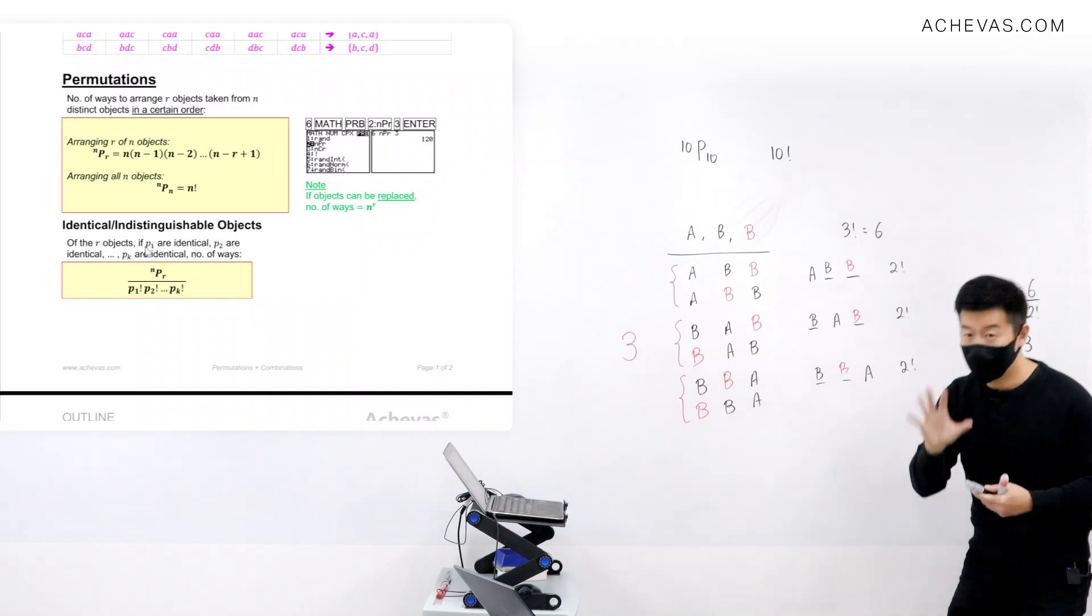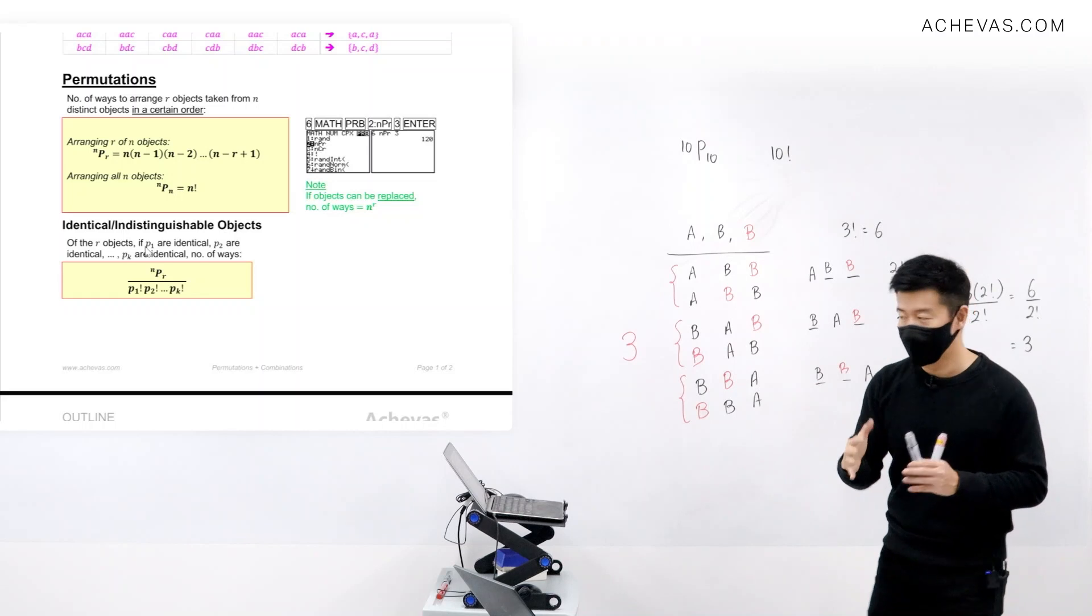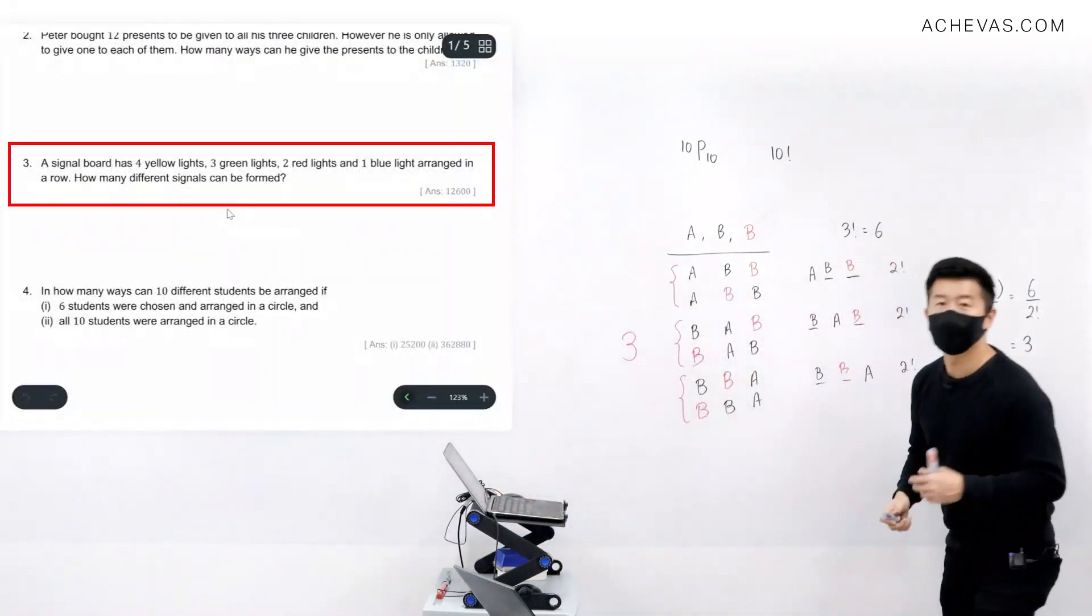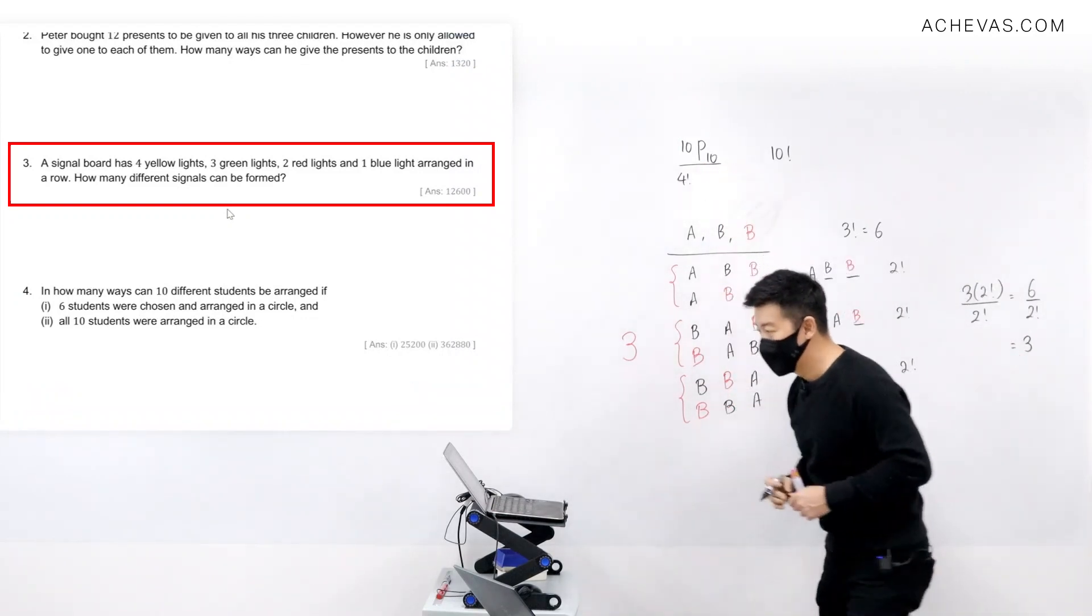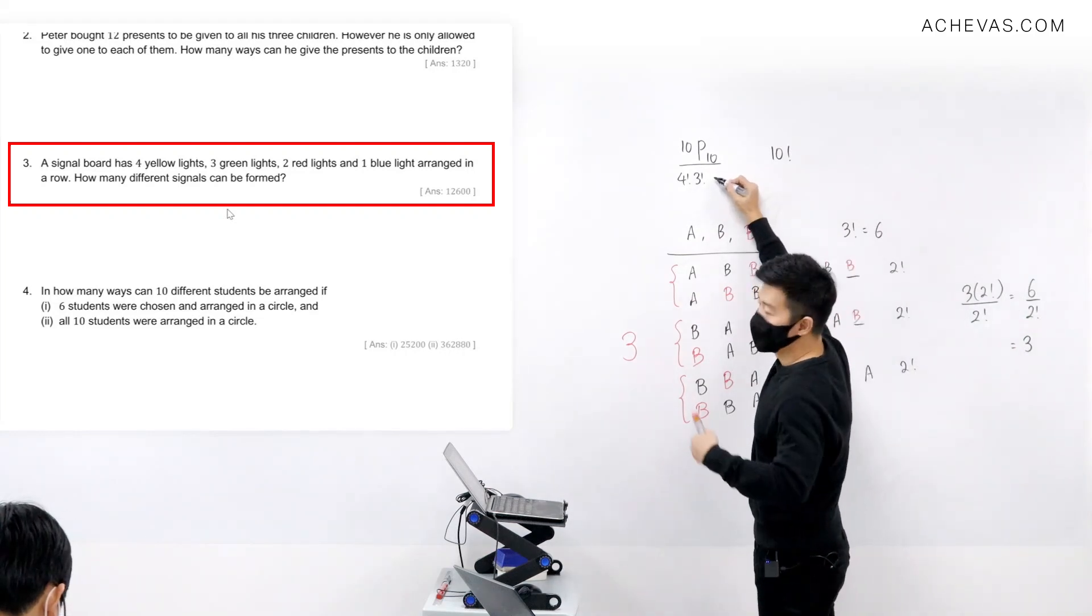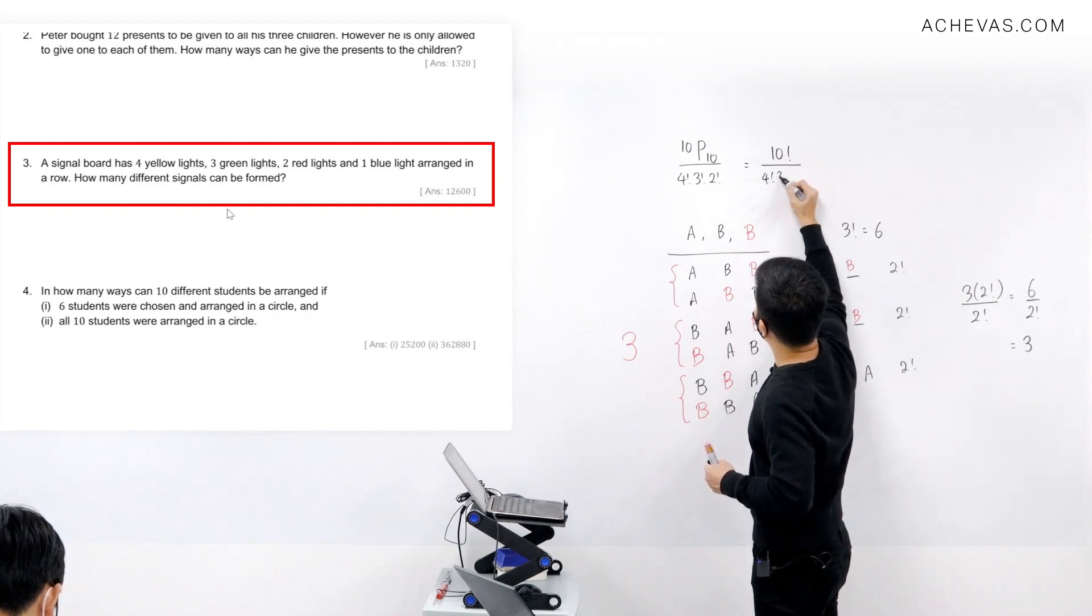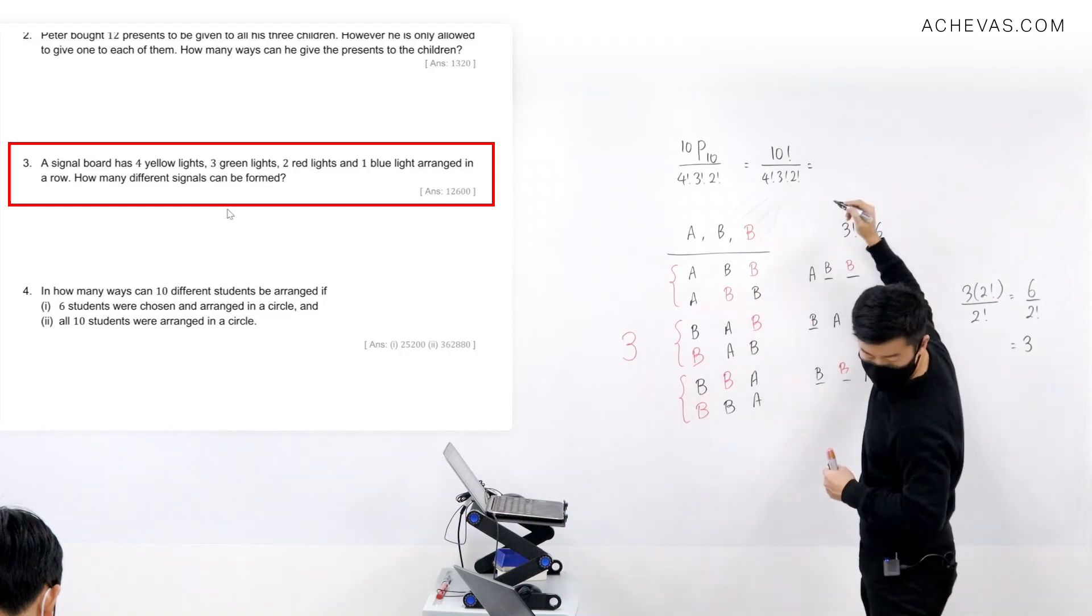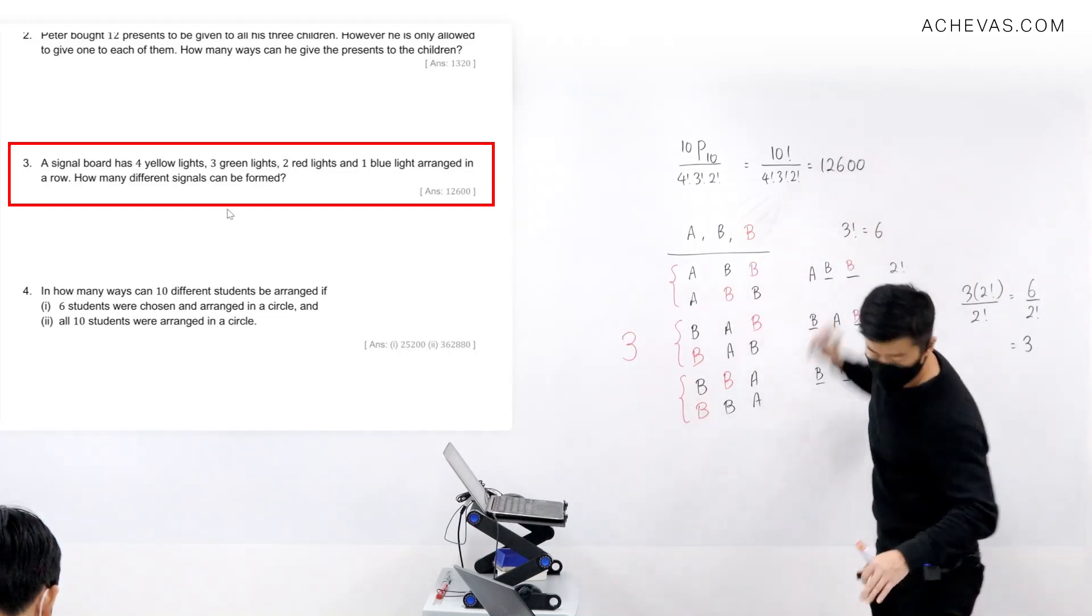This one is very, very easy to identify and apply based on condition. For example, like this particular case here: four yellow lights, I just need to divide by 4 factorial; three green lights, I just need to divide this by 3 factorial; two red lights, I just need to divide this by 2 factorial. So this is this divided by 4 factorial, 3 factorial, 2 factorial. This is equal to 1,260.